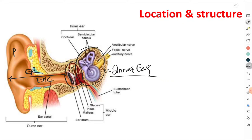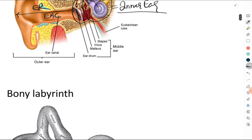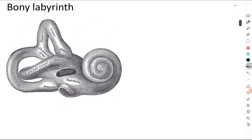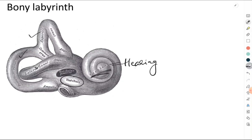The inner ear is made out of bony tubules, and this system of bony tubules is called the bony labyrinth. On one side the bony labyrinth has the cochlea, and on the other side it has these canals called the semicircular canals. Connecting the cochlea with the semicircular canals is the vestibule. The cochlea is concerned exclusively with hearing and does not take part in the vestibular apparatus.